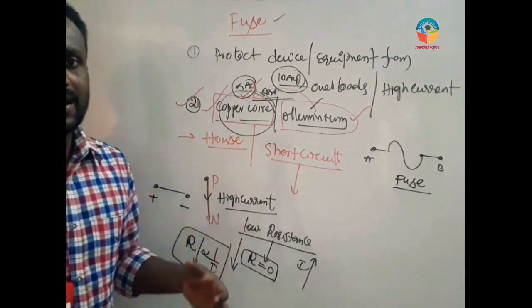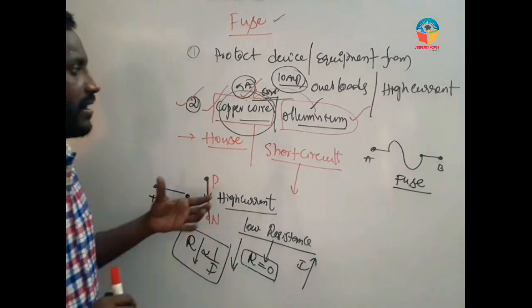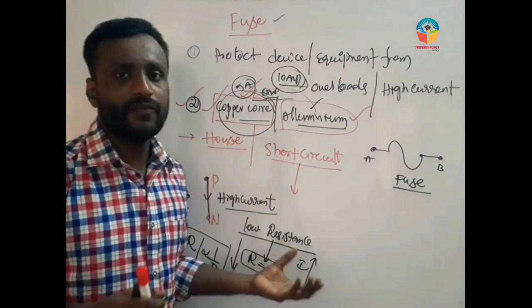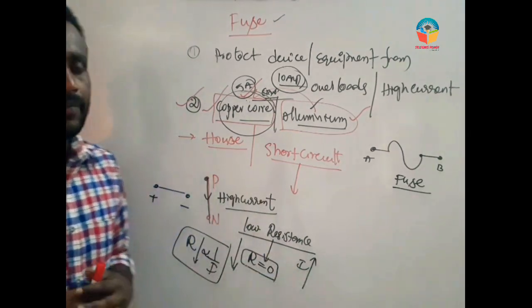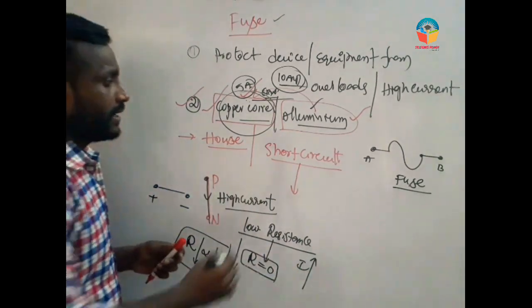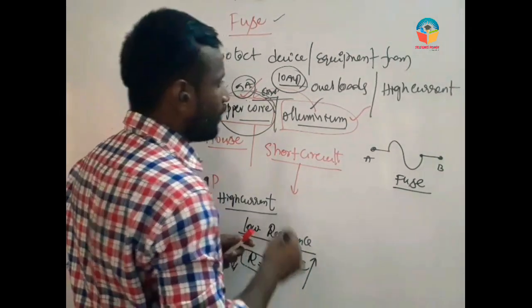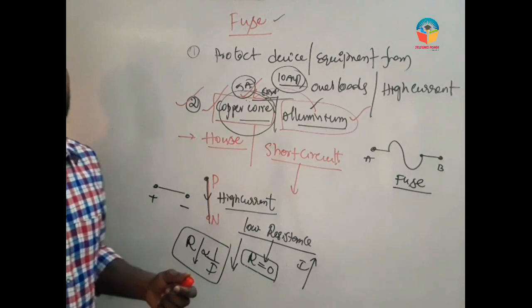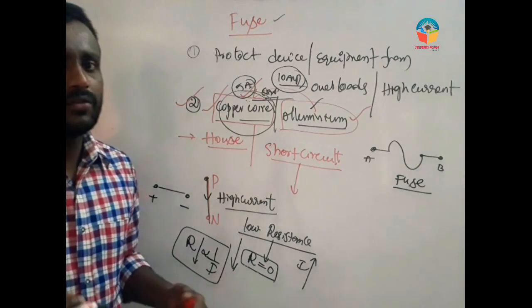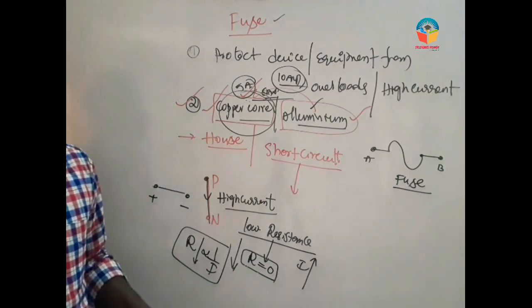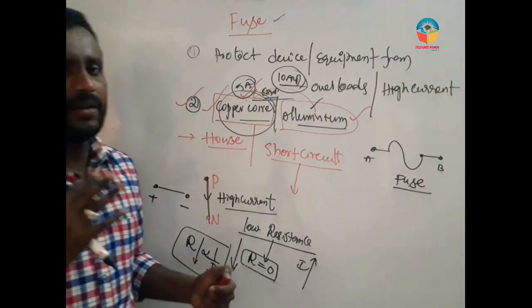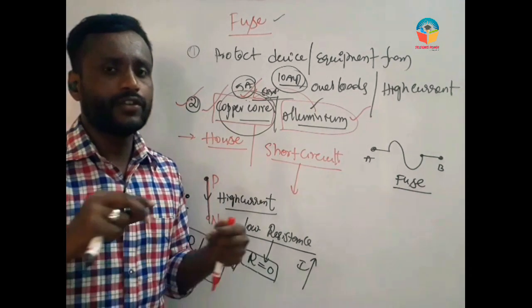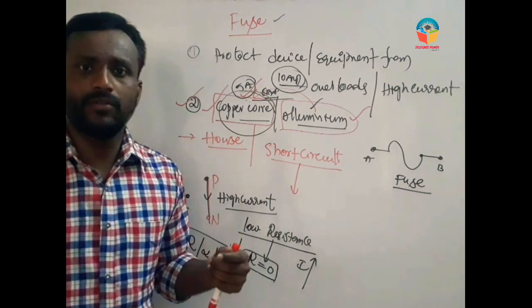Depending on their application, fuses are divided into different types. When overload current passes, the fuse will melt. The fuse wire melts and breaks the circuit.